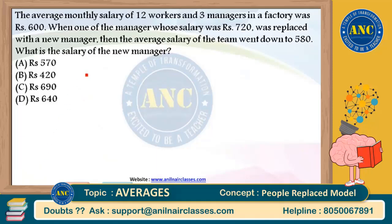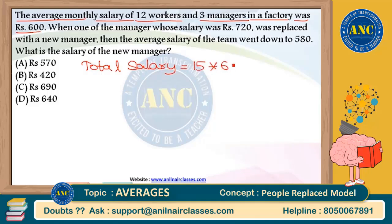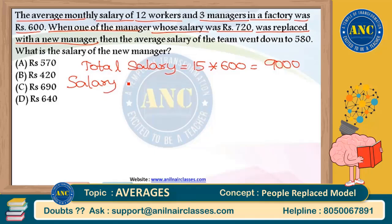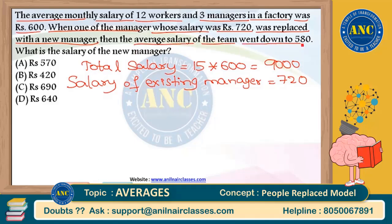Please see this question. Once you know the concept, you can solve all these questions superbly. The average monthly salary of 12 workers and 3 managers in a factory was Rs. 600. Totally 15 people are there; average is 600, so total salary is 15 into 600, which is 9000 rupees. When one of the managers whose salary was 720 rupees was replaced with a new manager — old manager had a salary of 720 rupees and he is replaced by a new manager.